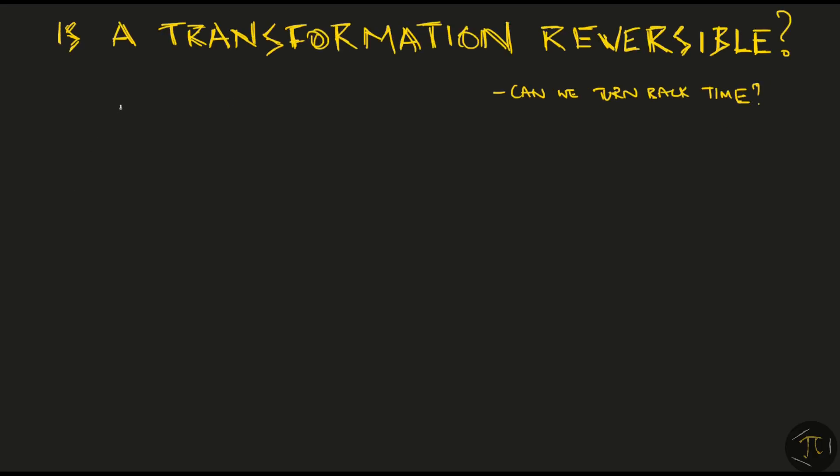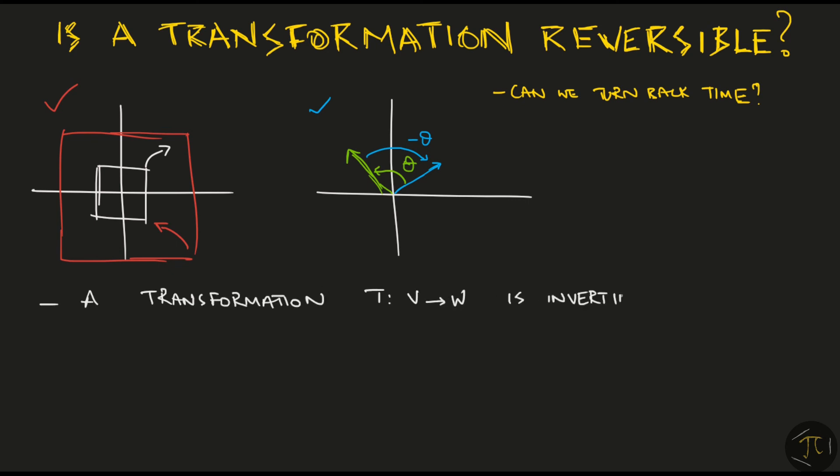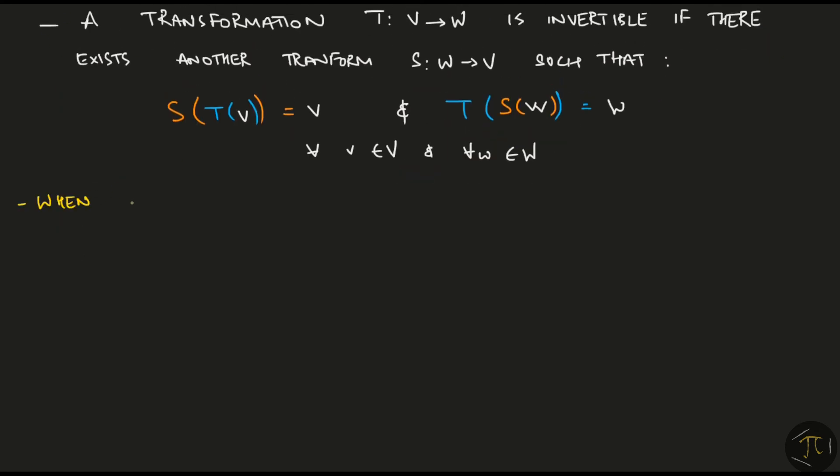Now let me ask you a tricky question. Is a transformation always reversible? If I scale vectors to be twice their original length, surely there exists some another transformation that will undo it. So this transformation is reversible. Similarly, the transformation that rotates all vectors in 2D by some angle theta can be reversed by rotating again by an angle negative theta. So a transformation T from V to W is invertible if there exists another transformation S from W to V such that these two equations hold. Now all this is saying is if you take a vector v, transform it to T(v), then transform it again using S, you must get back to the original vector. The second equation works the same way. For a given transformation T, if you can find a transformation S that does satisfy these two equations for all the vectors in V and W, only then we say that T is invertible.